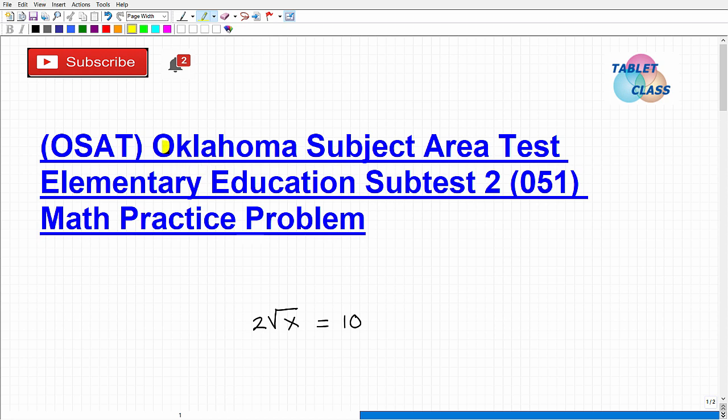Okay, let's talk about the Oklahoma Subject Area Test, and the specific OSAT test we're going to be talking about is the elementary education. As part of that particular test, we're going to be talking about subtest 2, and there is the test code.